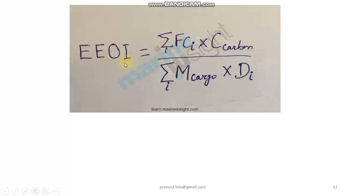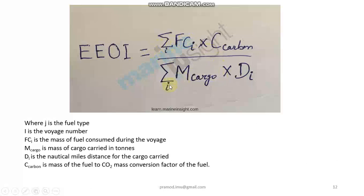A very simple method to measure EEOI is a formula where the first factor, sigma FCI, is the mass of fuel consumed during the voyage. That is multiplied with a CO2 conversion factor, representing the amount of pollution and the amount of fuel consumption.